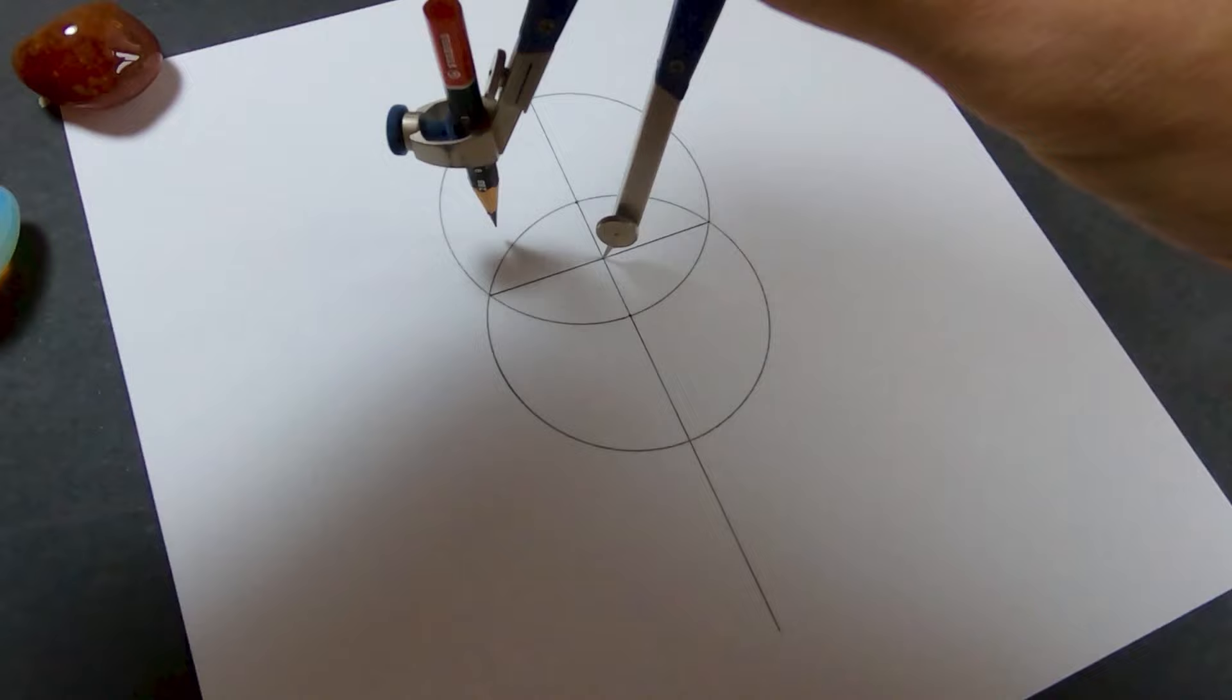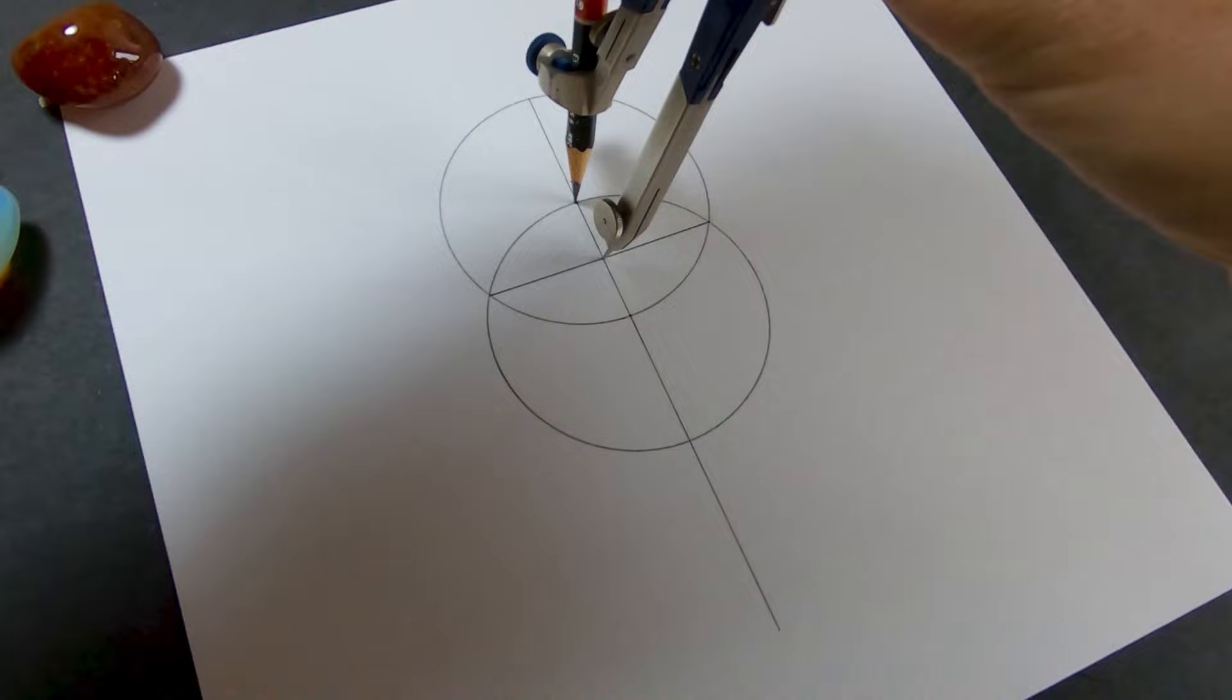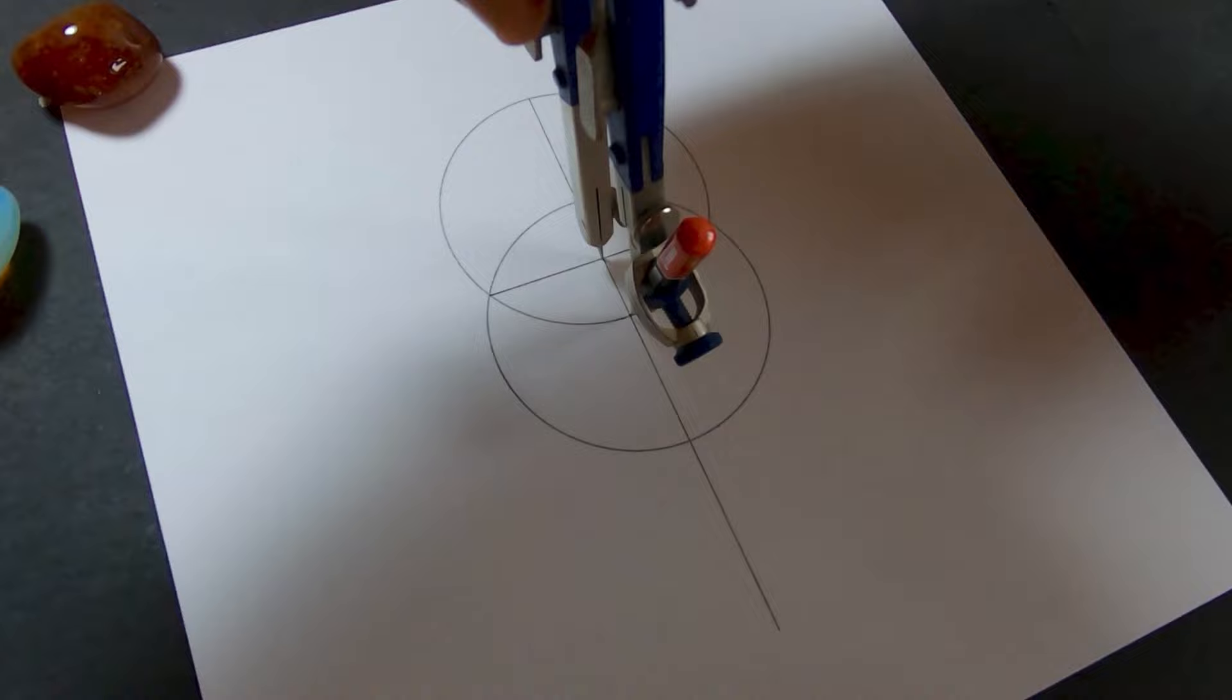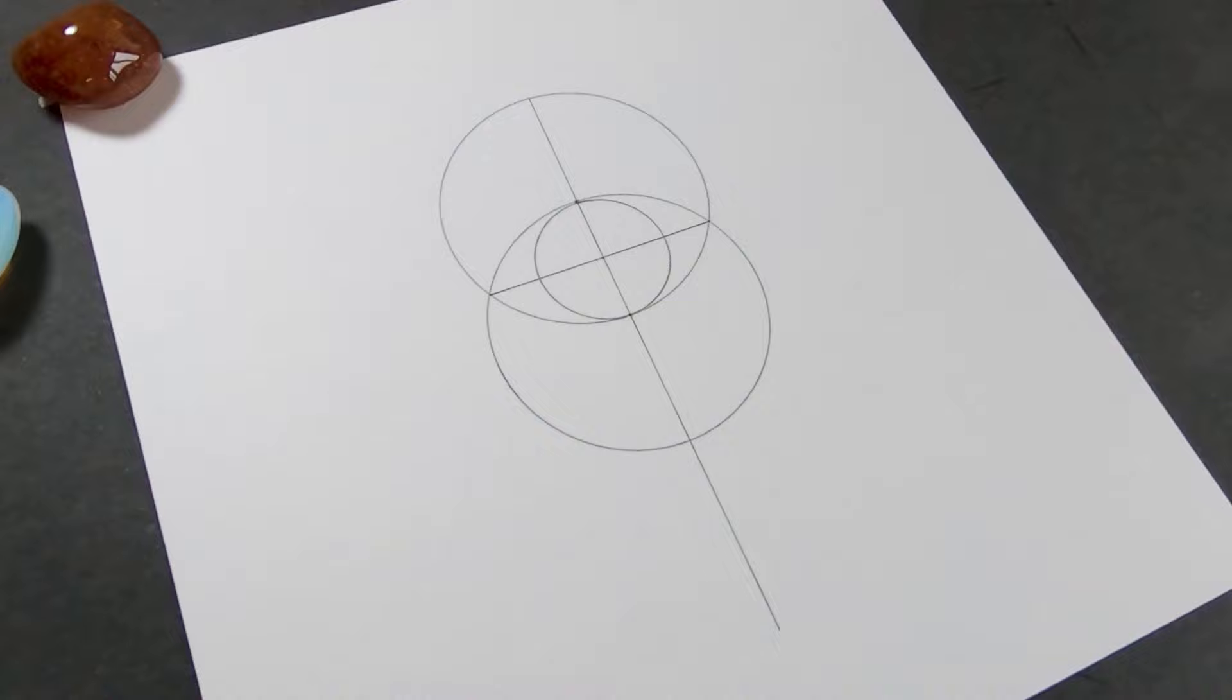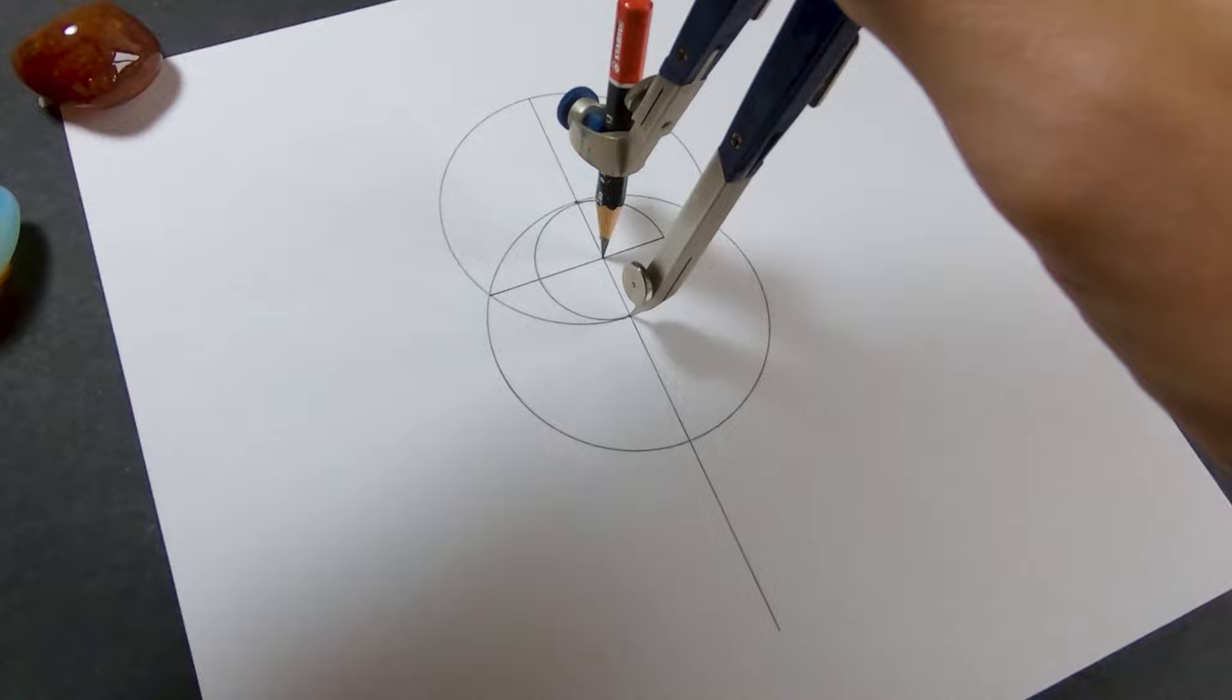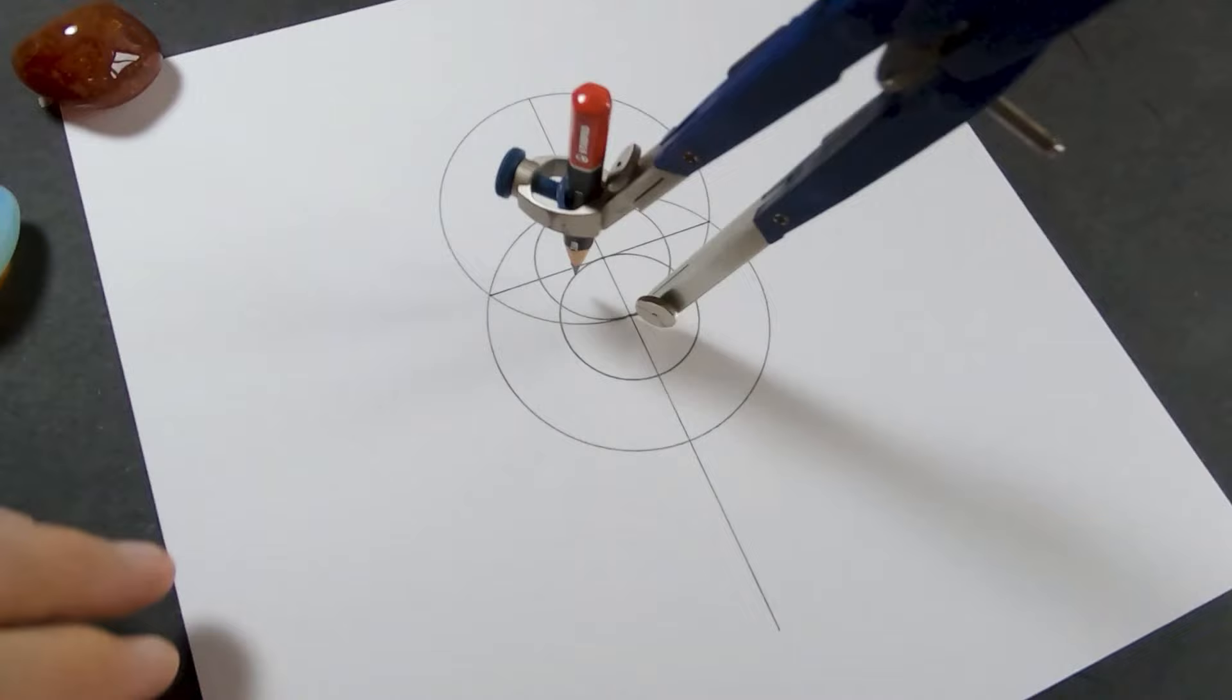Then I'll set my compass from the center of that to the edge of the circle and draw a little circle. This is half the size. And then go back to the center of the first circle that I drew, draw another little circle. And then that's divided that section into half again.